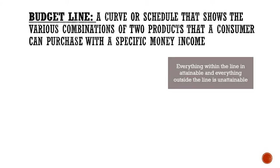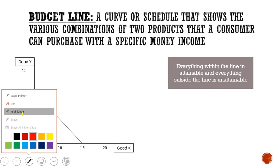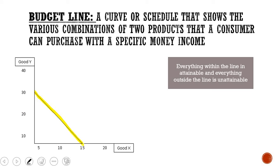We move on to the budget line. The budget line is a curve or schedule that shows the various combinations of two products that a consumer can purchase with a specific money income. This line represents the total money income and the various combinations of good X and good Y you can purchase with all of your money income. Everything within this line is attainable, meaning you have enough money to purchase those combinations.